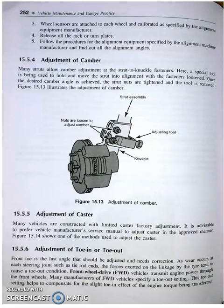For camber adjustment, when the strut allows camber adjustment at the strut-to-knuckle fastener, a special tool is used to hold and move the strut into alignment with the fastener. Once the desired camber angle is achieved, the strut nuts are tightened and the tool is removed. The figure shows the strut assembly, adjusting tools, loosened nuts, and the knuckle.